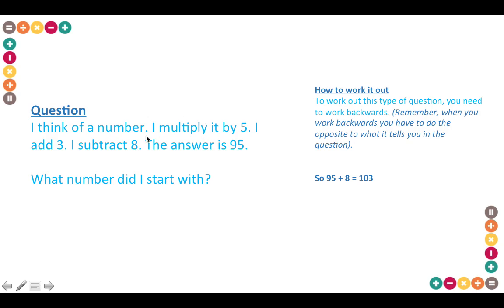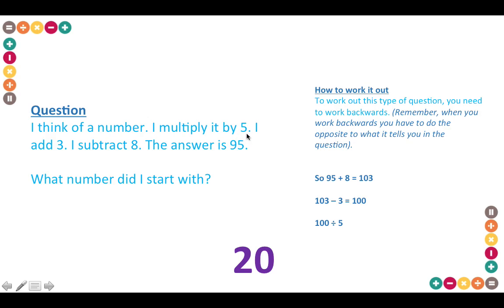So 95 plus eight — because it says subtract eight so you do the opposite — gives you 103. Then 103 minus three — because it says add three so you minus — gives you 100. Then 100 divided by five gives you 20. Putting that back in: 20 multiplied by five gives 100, add three gives 103, subtract eight gives 95. So you know the answer is correct because you've worked it both ways.